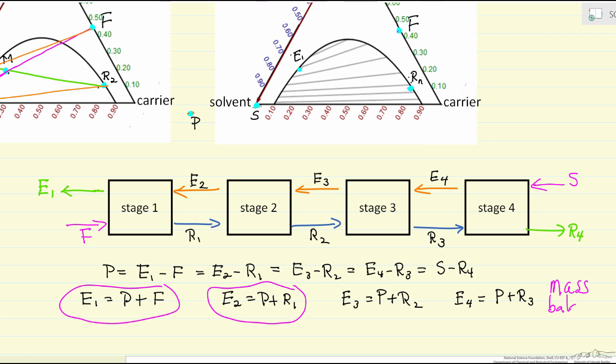The other important information is equilibrium phases. If I look at stage two, E2 leaving must be in equilibrium with r2. Likewise E1 must be in equilibrium with r1, and likewise for the other stages. This is important because we're going to use this in the Hunter-Nash method to determine the number of stages.